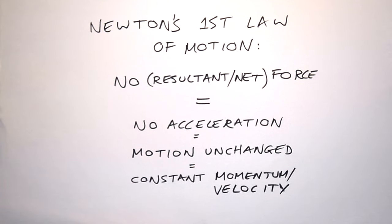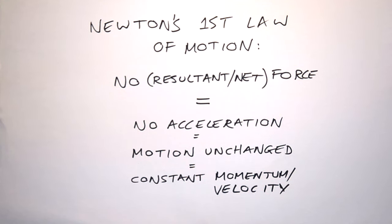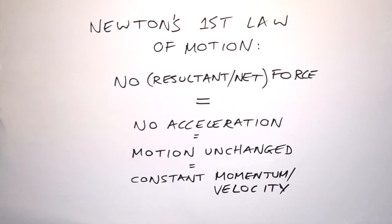Let's talk about balanced forces — systems that are in equilibrium. That means there are no net forces acting on an object or system. There might be forces present, but there is no overall resultant or net force. If that's the case, the object's motion is unchanged, meaning no acceleration, and it has constant momentum and constant velocity.